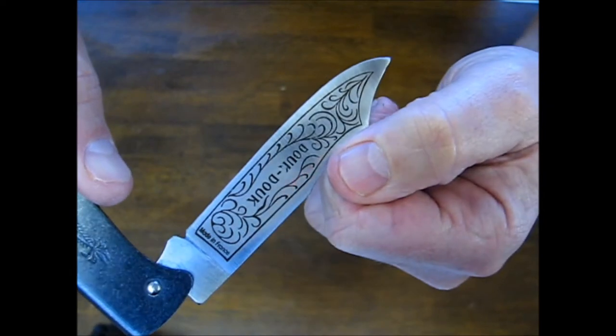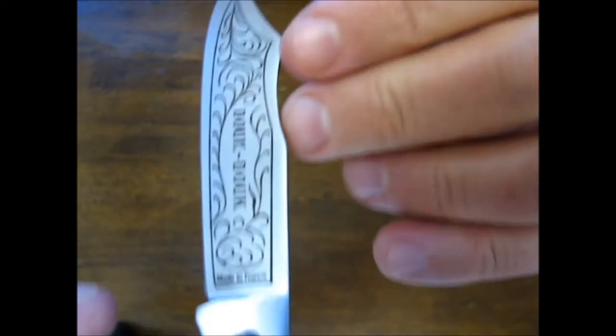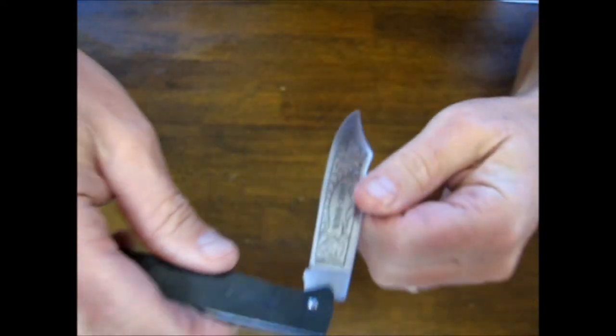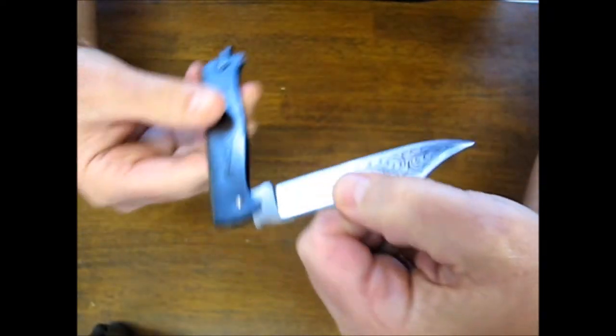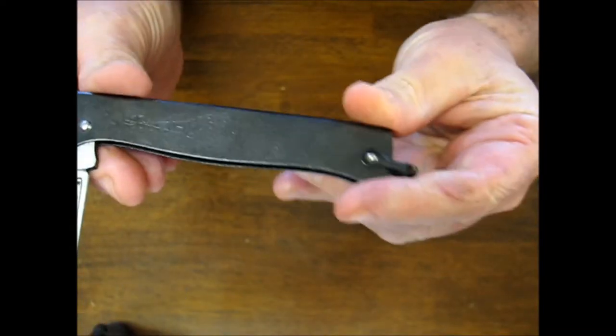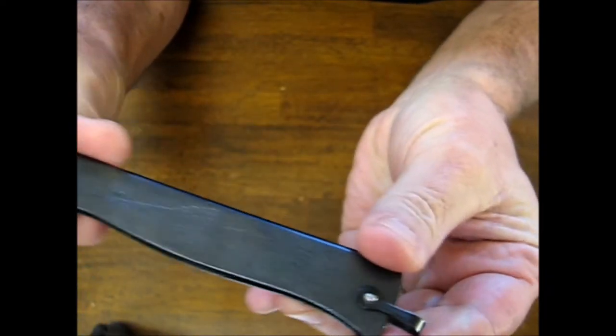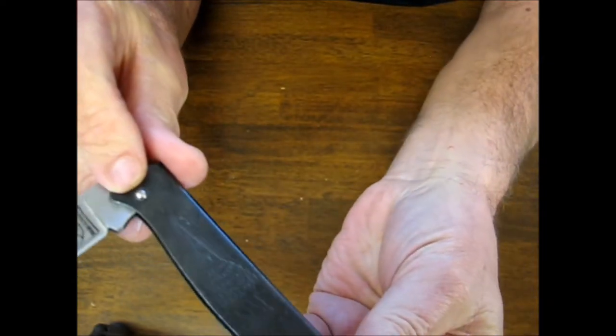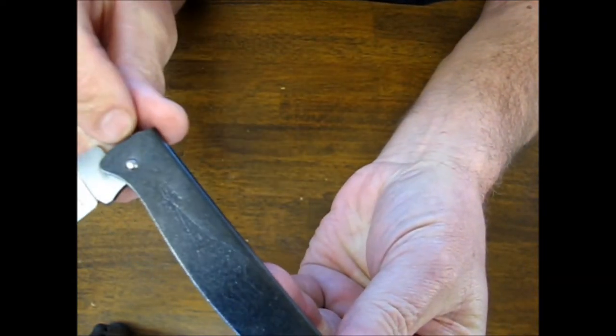Here it says on the blade, made in France, and it says Douc-Douc on it. There's no locking mechanism on these. This one has the charcoal black handle. I don't know if you can see that, but that's the picture of the Douc-Douc.